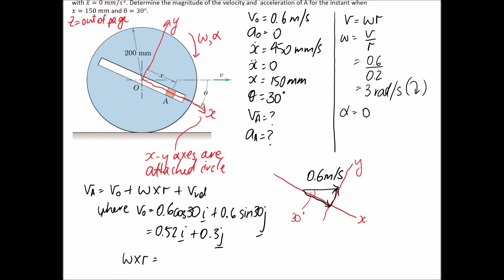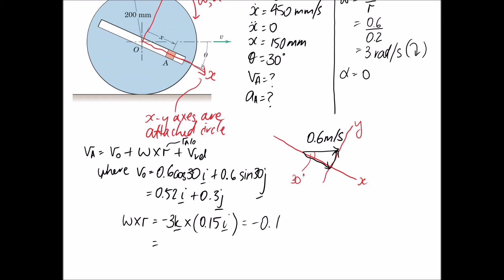Substituting into the equation: omega is −3k rad/s. The position of A relative to O is along the positive x-axis at x = 150 mm = 0.15 m, so r_AO = 0.15i. This is why aligning the x-axis along the slot makes it easy to define this vector. Computing omega cross r: (−3k) × (0.15i) = −0.45j.